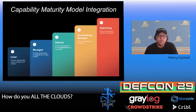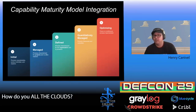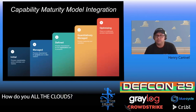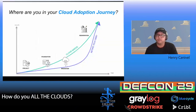When I talk about the cloud maturity model integration, this framework has traditionally been focused on application developments and deployments. We can talk about these five different areas: initial, managed, defined, quantitatively managed, and optimizing. Most environments when you're deploying software go from a proof-of-concept stage all the way to something that's really taking advantage of cloud environments and the tech stack. We want to adopt this framework for cloud as well.